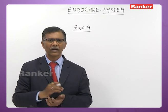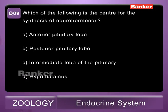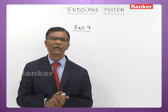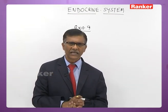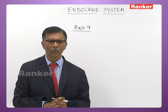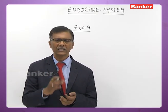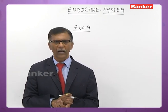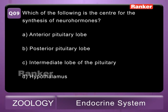Ninth question: which is the center for release of neurohormones? A - anterior pituitary lobe, B - posterior pituitary lobe, C - intermediate lobe of pituitary, D - hypothalamus. The hypothalamus has several neurosecretory cells and secretes several neurohormones. These neurohormones are released into the anterior and posterior lobes through the hypothalamo-hypophyseal tract. Ninth question answer is D — hypothalamus.